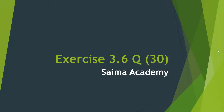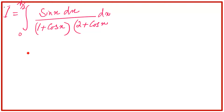In this lesson, we will solve 3.6 question number 30. The question we have is: integral I is equal to the integral from 0 to π/2 of sin(x) dx divided by (1 + cos x)(2 + cos x).